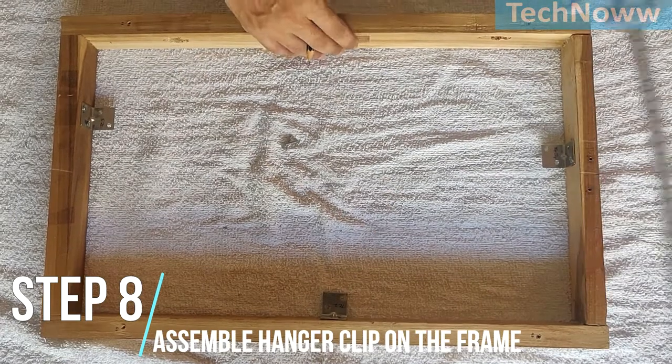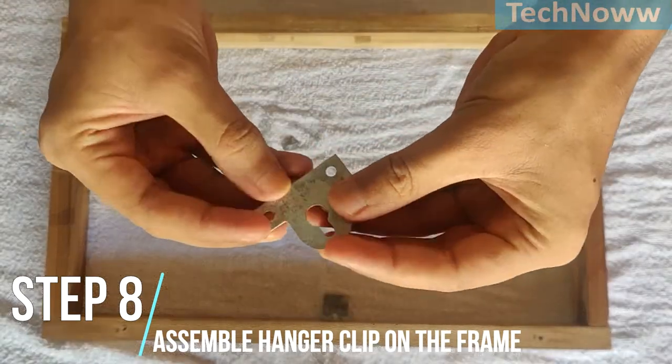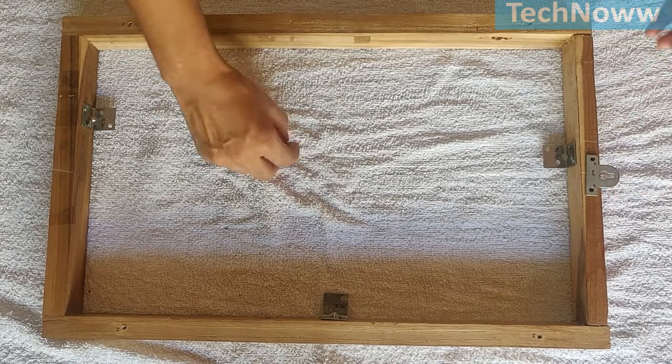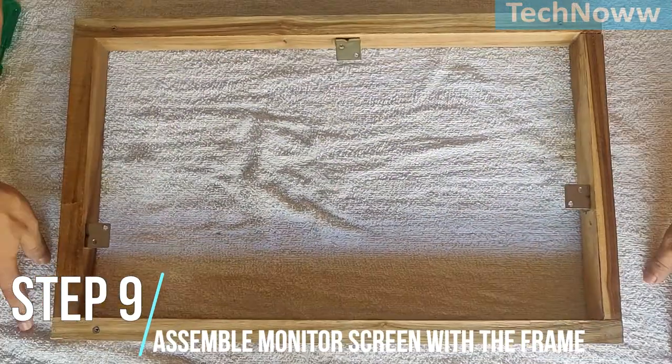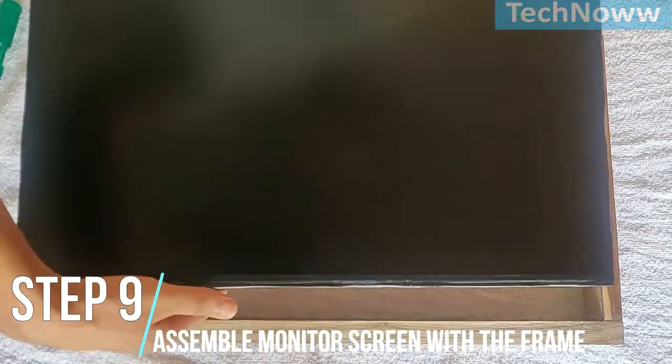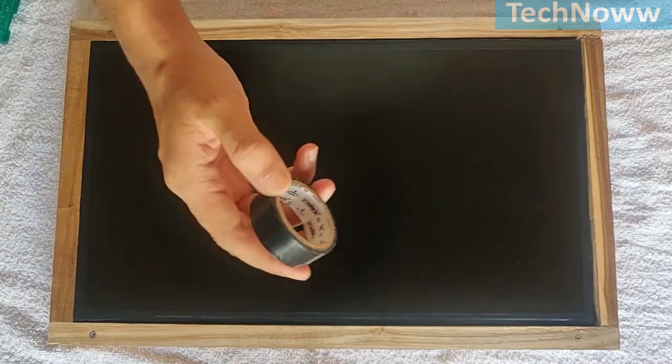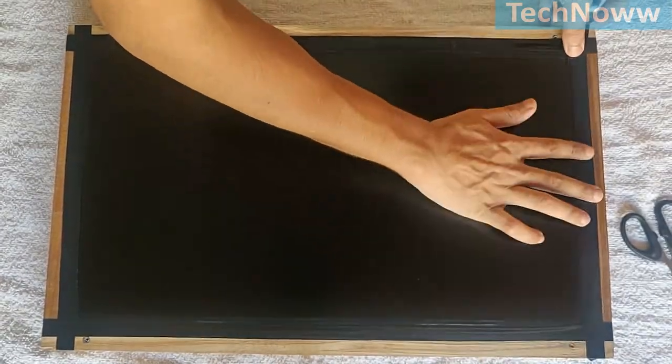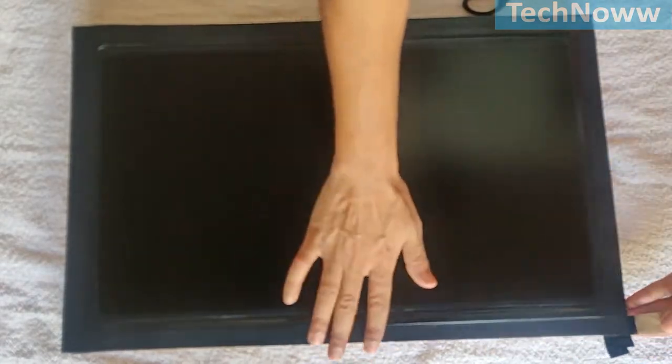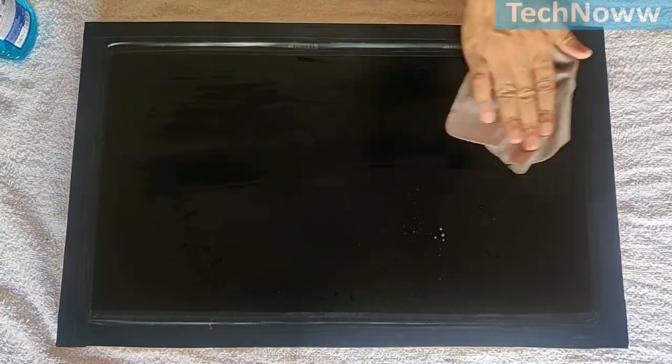Step 8: Assemble the hanger clip on the frame. At last, place the hanger clip on the back face of the frame at the center. Step 9: Assemble monitor screen with frame. Now gently position the screen on frame. The screen would now rest on the support clips. Seal the sides and edges with electrical tape. Wipe the dirt off the screen gently. Locate the position of holes on the frame.